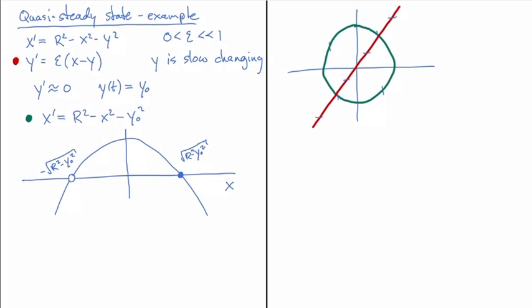What we've concluded from the phase line is that if we fix a value of y-naught and figure out how the solution moves on the fast timescale, let's say we choose a y-naught value right here, that corresponds to an initial condition here.